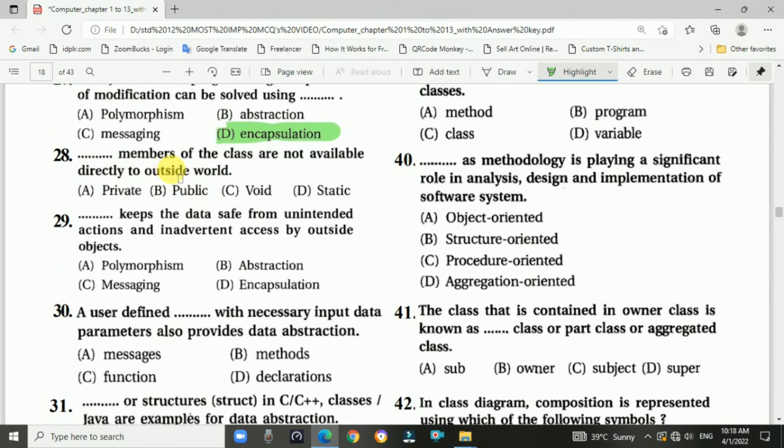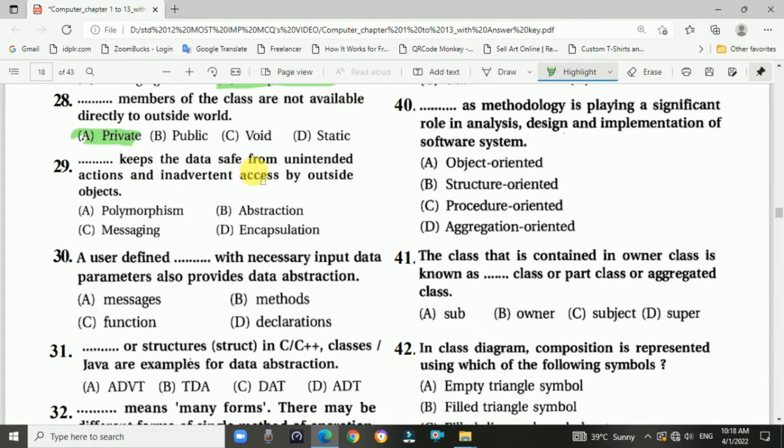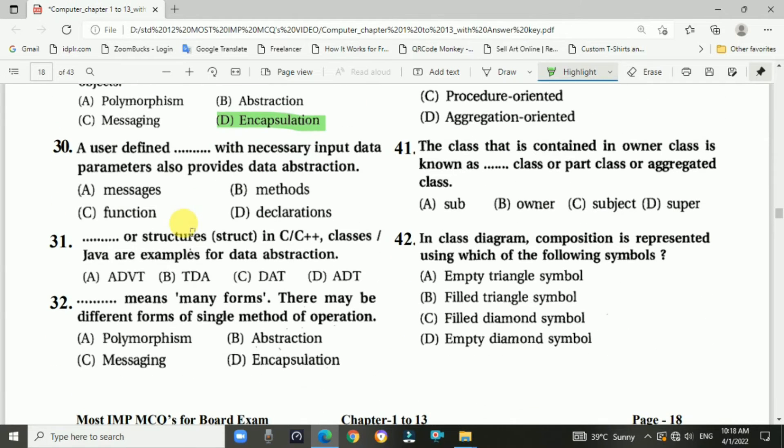Question number twenty-eight: Blank members of the class are not available directly to the outside world. Answer is A, private. Question number twenty-nine: Blank keeps the data safe from unintended actions and unintended access by outside objects. Answer is encapsulation. Question number thirty: A user-defined blank with necessary input data parameters also provides data abstraction. Answer is C, function.